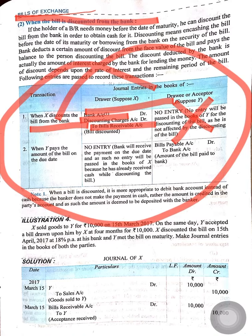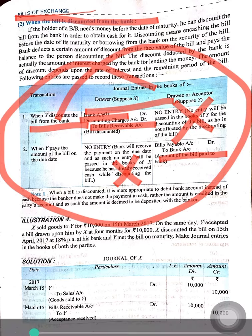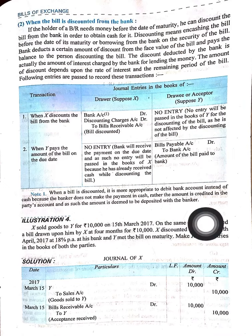At the payment of the bill, when the bill is paid, no entry will be done in X's books because the bill is no longer with X. Y will do its entry, which is the common entry: Bills Payable Account debit to Bank.